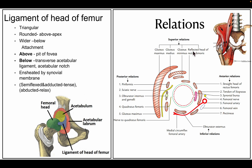The relations of the hip joint: anterior relations include the straight head of rectus femoris, tendons of iliopsoas, a synovial bursa deep to iliopsoas, the femoral nerve, femoral artery, femoral vein, and the pectineus muscle. The inferior relation is the obturator externus. Superior relations include gluteus maximus, gluteus medius, gluteus minimus, and the reflected head of rectus femoris. Posterior relations include the piriformis, sciatic nerve, obturator internus, superior and inferior gemelli, quadratus femoris, gluteus maximus, and the nerve to quadratus femoris.